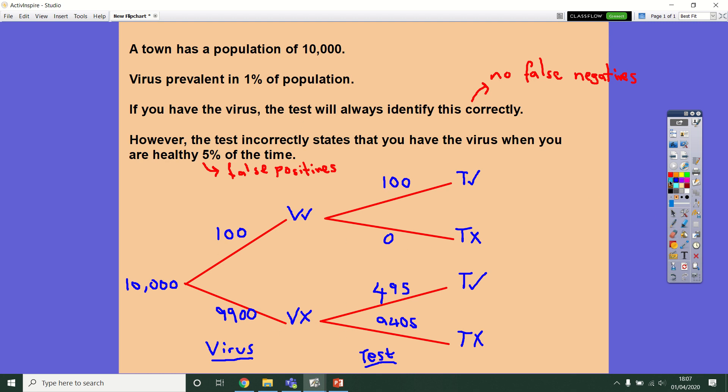That's our diagram filled in. What I want to look at in particular is a conditional probability. And so I want you to suppose that you get your test results back in the mail and your test results say that you have the virus. Given that information, I want you to work out the probability that you have the virus in the first place.